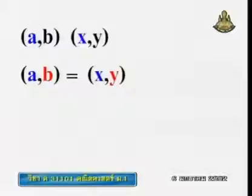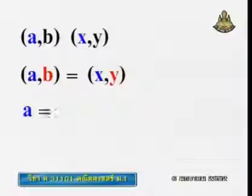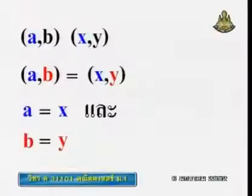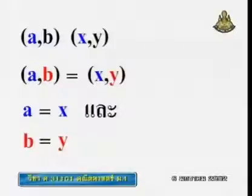a, b, x, y — the meaning is: for two ordered pairs to be equal, the first element of the ordered pair must be equal, and the second element of the ordered pair must also be equal. That is the meaning of equality of ordered pairs.